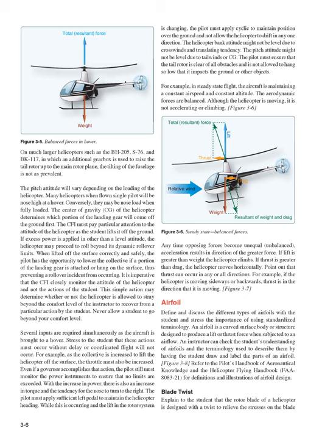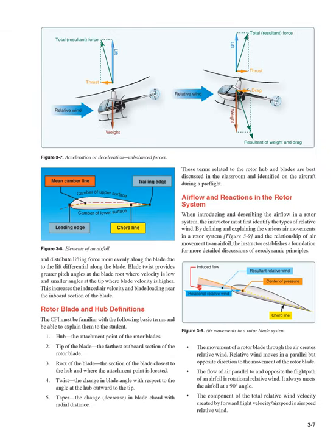Airfoil: define and discuss the different types of airfoils with the student and stress the importance of using standardized terminology. An airfoil is a curved surface, body, or structure designed to produce a lift or thrust force when subjected to airflow. An instructor can check the student's understanding by having the student draw and label the parts of an airfoil. Blade Twist: explain to the student that the rotor blade of a helicopter is designed with a twist to relieve stresses on the blade and distribute lifting force more evenly. Blade twist provides greater pitch angles at the blade root where velocity is low and smaller angles at the tip where blade velocity is higher, increasing induced air velocity and blade loading near the inboard section.